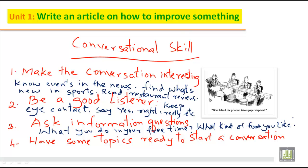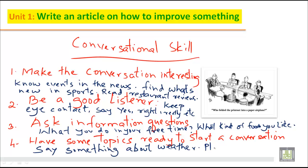The topic sentence 'have some topics ready to start a conversation' should in fact be our first main idea. For example, say something about the weather — this is one of the easiest things to talk about — or talk about the place where you live. This is how we write an article on how to improve your conversational skill.